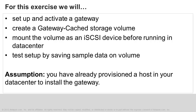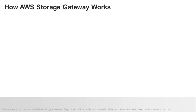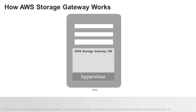This exercise assumes that you've already provisioned a host in your data center running VMware ESXi hypervisor. Please consult our technical documentation for detailed host requirements. We will be using a Windows client to mount our gateway storage volume, and VMware's vSphere client to configure our storage gateway VM. The AWS Storage Gateway is deployed as a virtual machine that you install on a host in your data center. You create storage volumes on your gateway which you mount to your on-premises application servers as iSCSI devices.